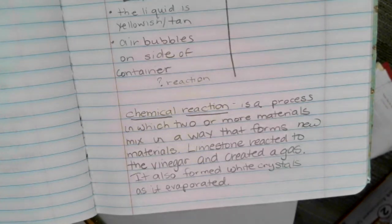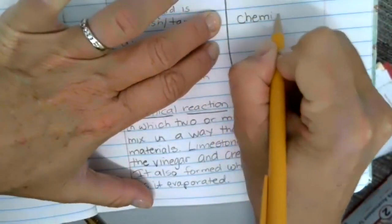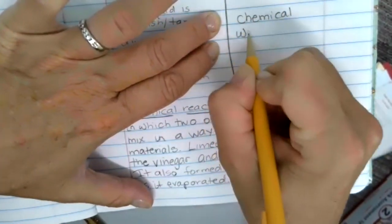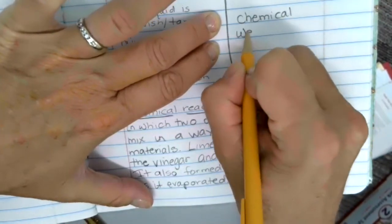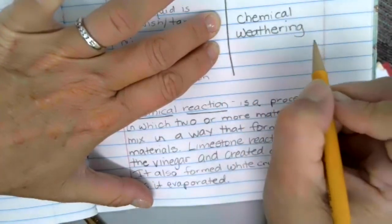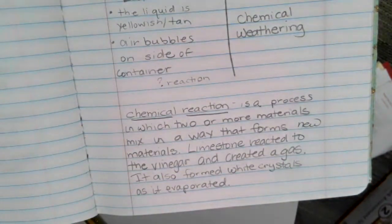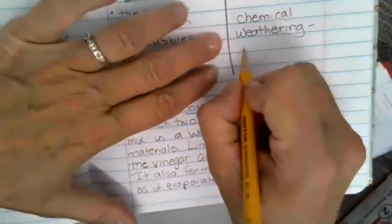This is an example of chemical weathering, chemical weathering. So we had learned about physical weathering. Now you have learned about chemical weathering. And this is what happens when a rock or a mineral is exposed to something like acid rain. It can dissolve parts of the minerals that hold the rock together.